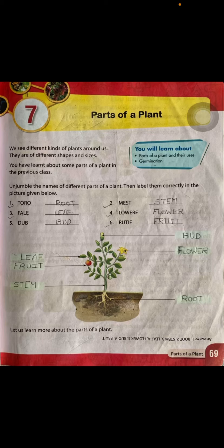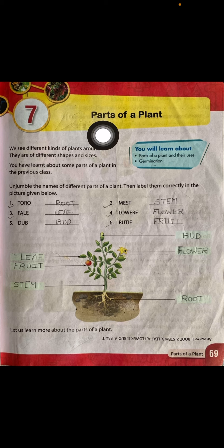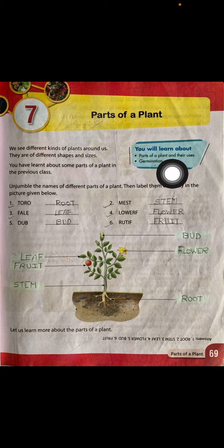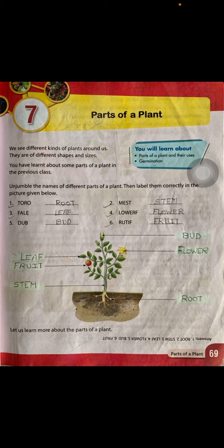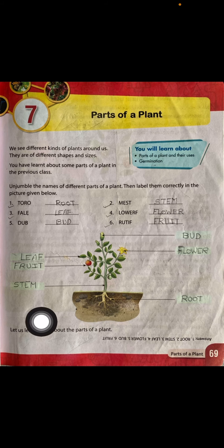Namaskar everyone! I hope you are all fit and healthy. From today we are going to start our new chapter — Chapter Number 7. The name of our chapter is 'Parts of Plants.' In this chapter we are going to learn about parts of plants and their uses, and also about germination. So open page number 69.